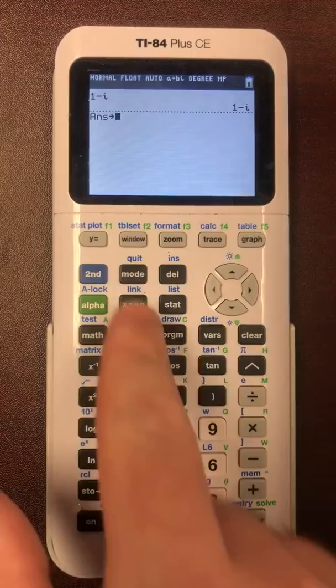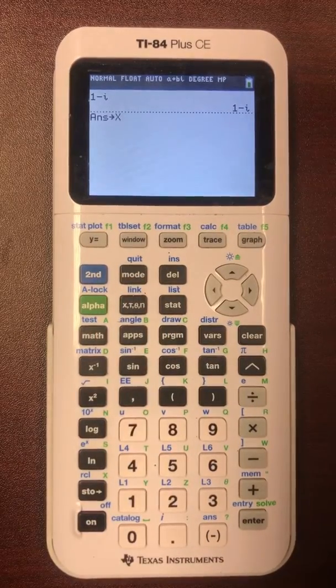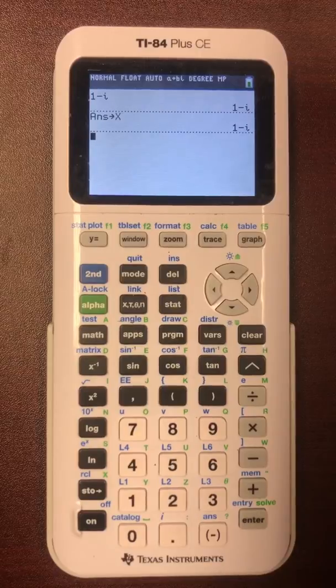For the purposes of right now, we're going to use X because it's a little faster because it's just one button press. So we're going to store 1 minus I as X.